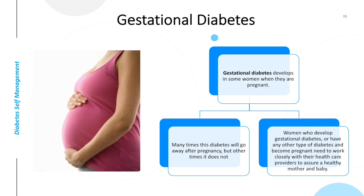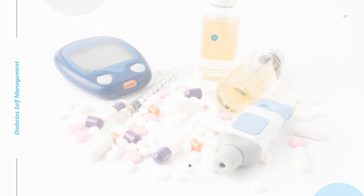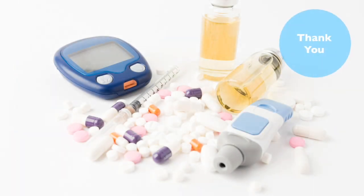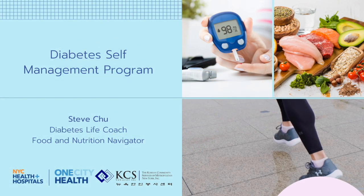There is another type of diabetes called gestational diabetes that develops in some women when they are pregnant. Many times this diabetes will go away after pregnancy, and other times it does not. Women who develop gestational diabetes, or who have any of the other types of diabetes and become pregnant, need to work closely with their health care providers to assure a healthy mother and baby. Some people have been told they have pre-diabetes or are at risk for diabetes. The line between pre-diabetes and diabetes is not rigid and depends on many things. If someone has been told they have pre-diabetes or diabetes, all the things in this workshop would be helpful. All of us who have pre-diabetes or diabetes need to manage our blood sugar. Caring for our diabetes can seem overwhelming, especially at first. In this workshop, we will learn the tools to become more involved in our care and better at managing diabetes.